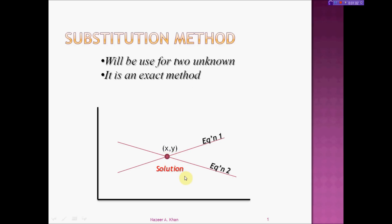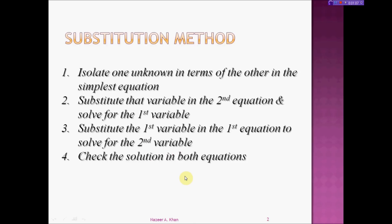Let's look at the procedure for substitution method. Number one: isolate one unknown in terms of the other in the simplest equation. Substitute that variable into the second equation and solve for the first variable. Then substitute the first variable in the first equation and solve for the second variable. You're going to check your answers in both of the equations—it has to be the common point in both equations.